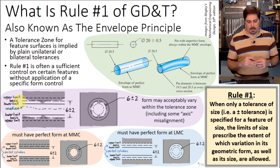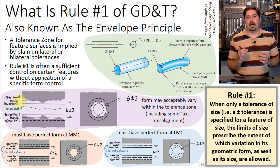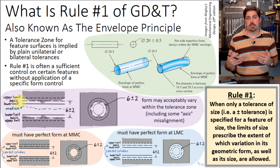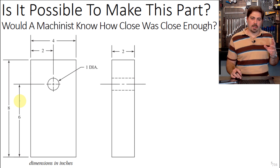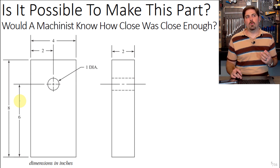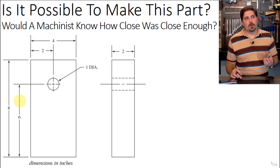To reiterate: Rule One is often sufficient control on certain features in terms of their form without having to apply a specific additional form control. But not always — sometimes as a designer you'll want to apply additional form control onto your features, and that depends on your application.